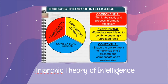Sternberg proposed three aspects of intelligence: componential, experiential, and contextual. Componential or analytical intelligence includes abstract thinking and logical reasoning, verbal and mathematical skills. Experiential or creative intelligence involves divergent thinking and the ability to deal with novel situations. Contextual or practical intelligence is the ability of being street smart. It is also the ability to apply knowledge to the real world and shape or choose an environment.